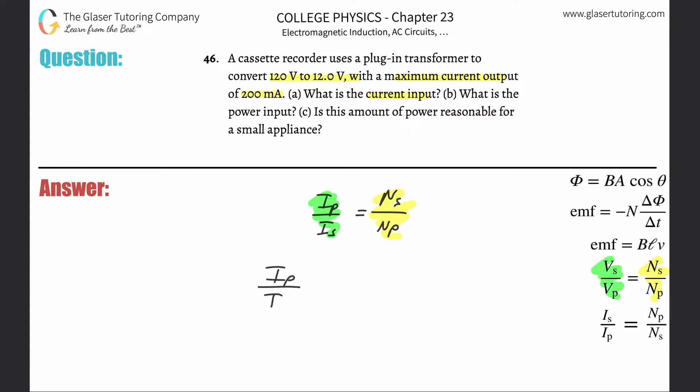So this is IP over IS is equal to VS over VP. Now you can memorize this if you want, or you can derive it whenever you need. It doesn't really matter. You can add this to like your third formula if you want.